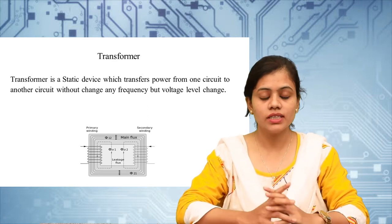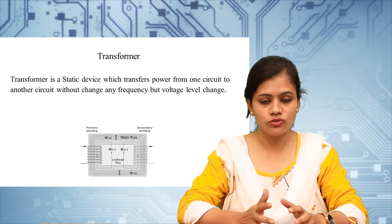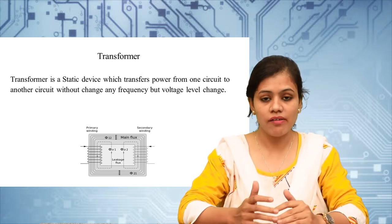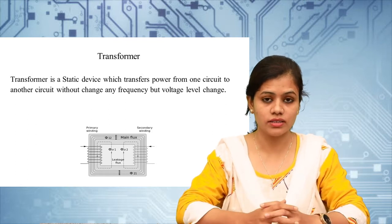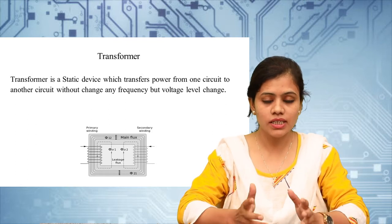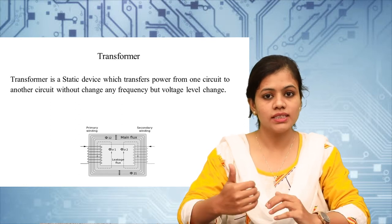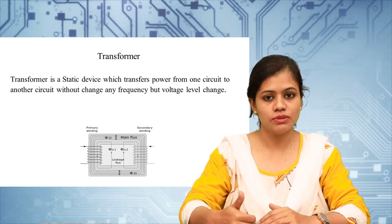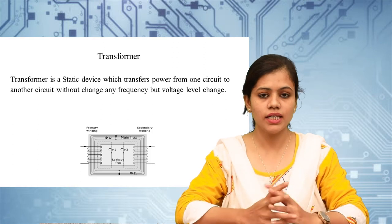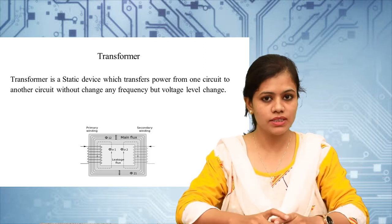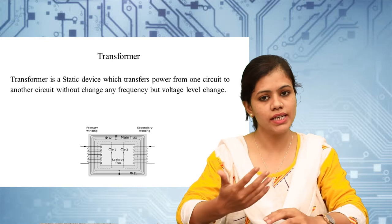In a transformer there is no electrical connection between the primary and secondary. The power is transmitted from one circuit to another circuit through the magnetic flux. By using the transformer we can transmit power in a transmission line during generation, transmission, and distribution. Simply put, in a transformer the power must be the same, frequency must be the same, but the voltage level can change.